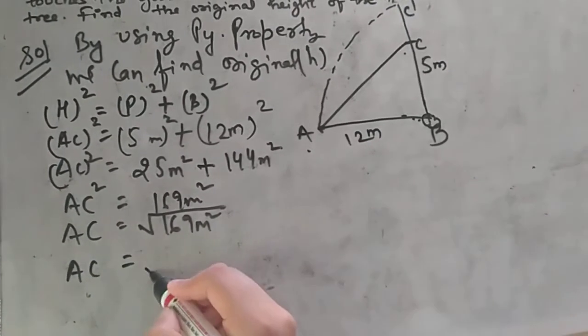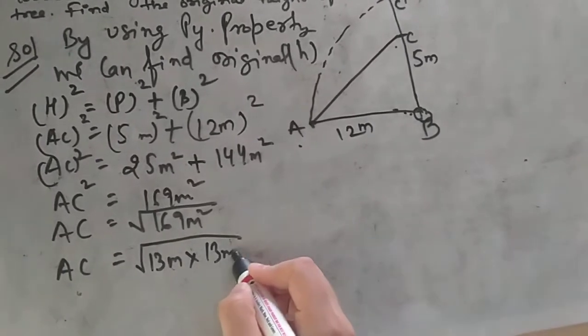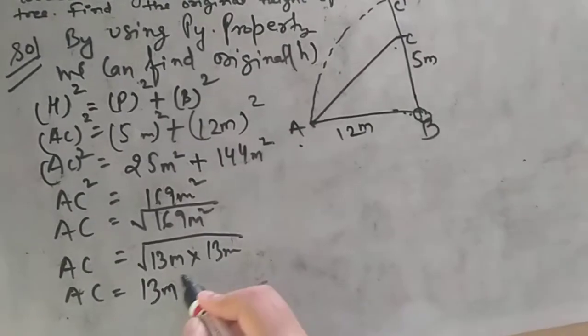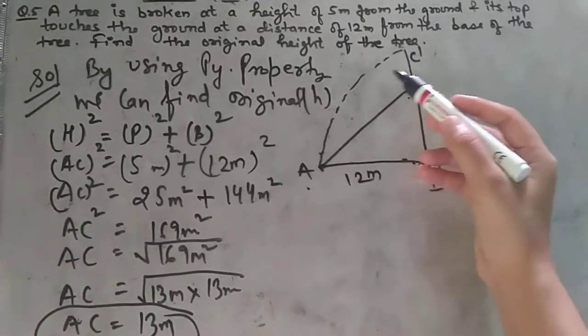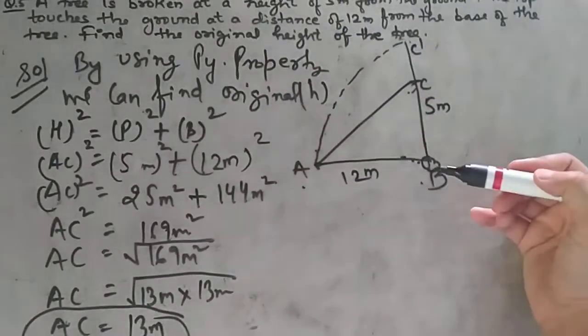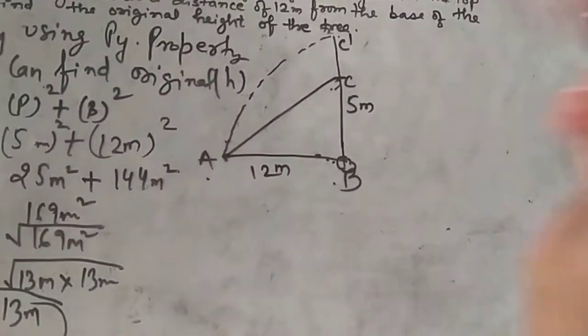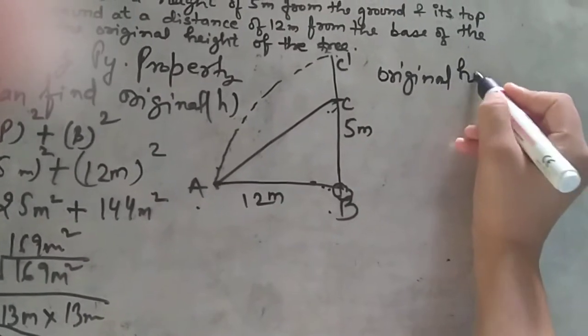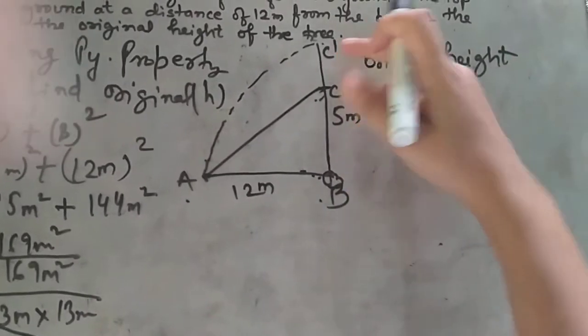This is just this height. But we need to find the original height. So what will we do? We will find the original height. What is the original height? BC plus CC dash.